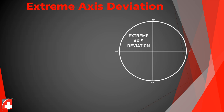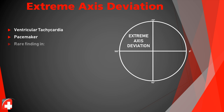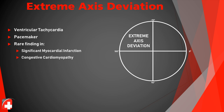Extreme axis deviation has only a few causes. Most importantly, if you come across an EKG that is wide and fast and presents with extreme axis, it's ventricular tachycardia until proven otherwise. It could also be a pacemaker — usually found more in the left axis zone but sometimes in the extreme axis zone. It's also a rare finding in some dilated cardiomyopathy and significant myocardial infarctions.